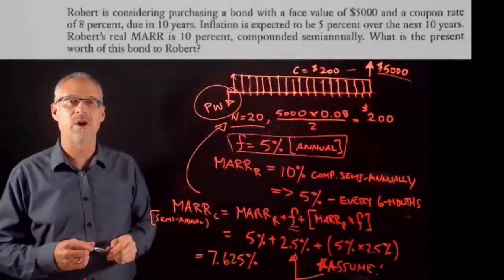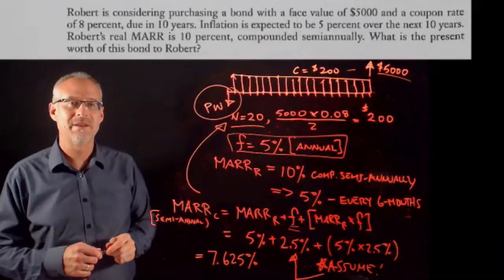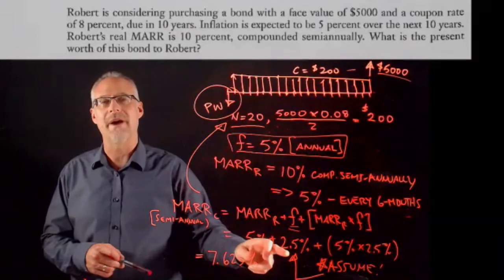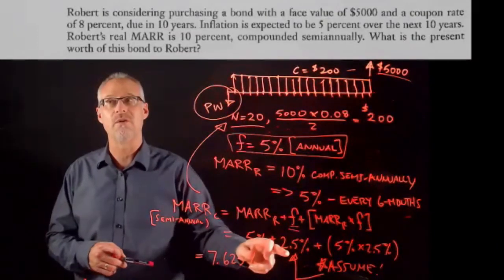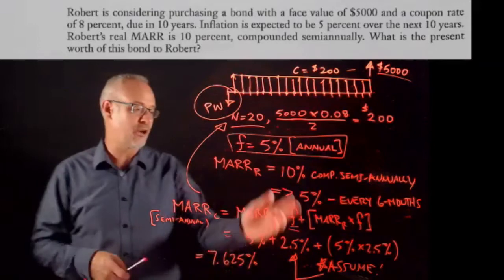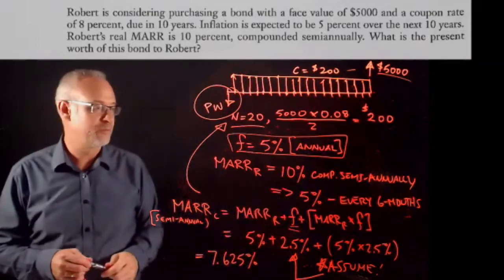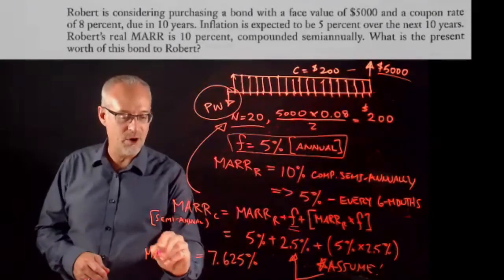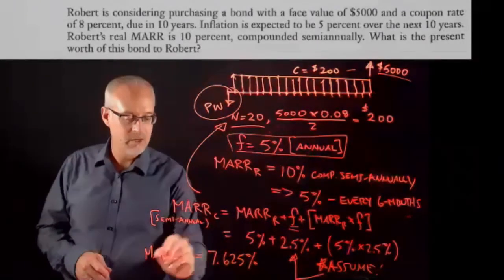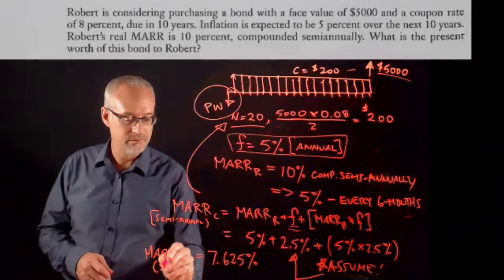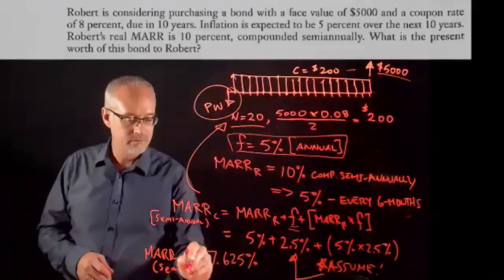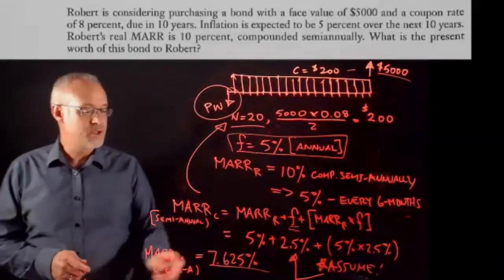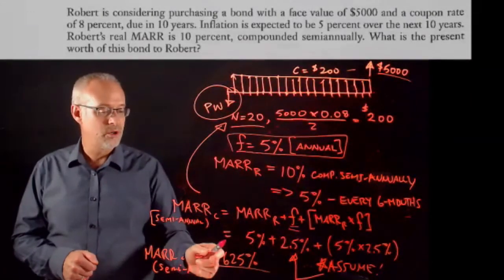So if we're compounded semi-annually, that means we need a rate - technically this would be 2.47% or something like that. I'm just going to call it 5% just to make it simple. This is the current MAR semi-annual.